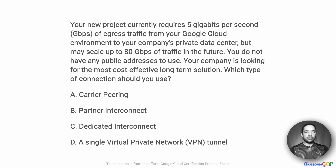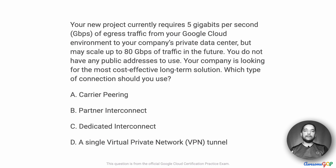In this project scenario, your new project currently requires 5 Gbps of egress traffic from your Google Cloud environment to your company's private data center, but it might scale up to 80 Gbps of traffic in the future. You do not have any public addresses to use, and your company is looking for the most cost-effective long-term solution. Which type of connection should you use?